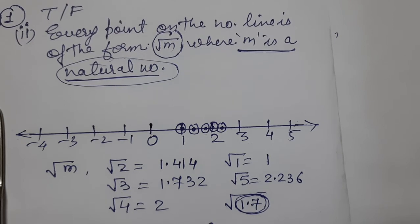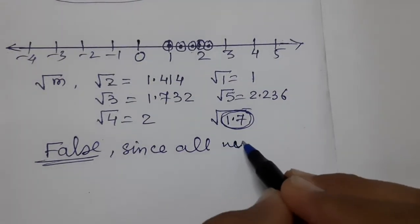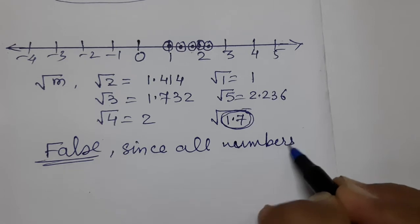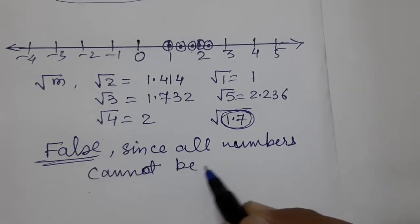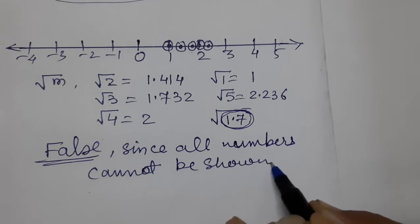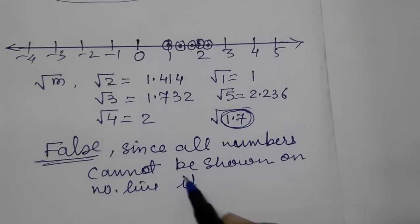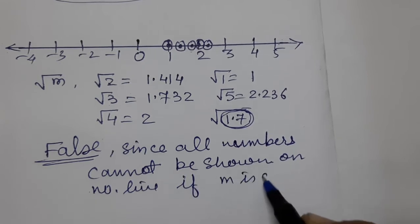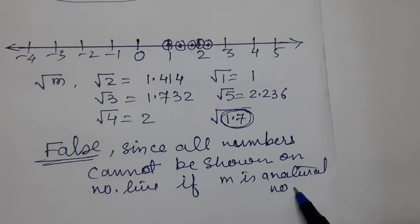Since all numbers cannot be shown on the number line if M is a natural number — the statement is false. This is the solution of the second question.